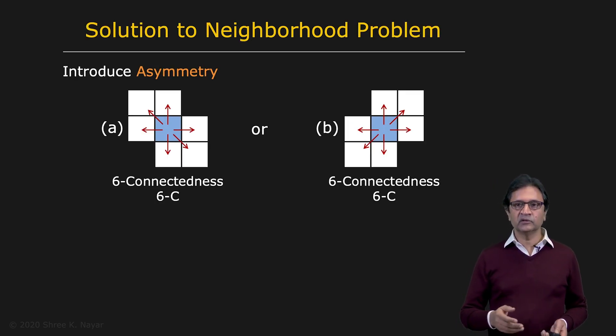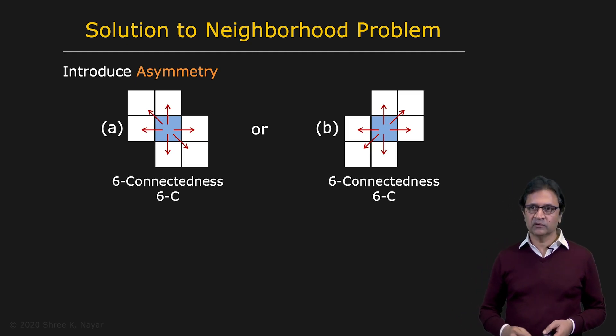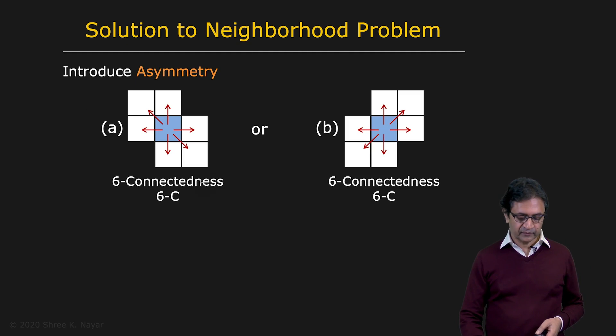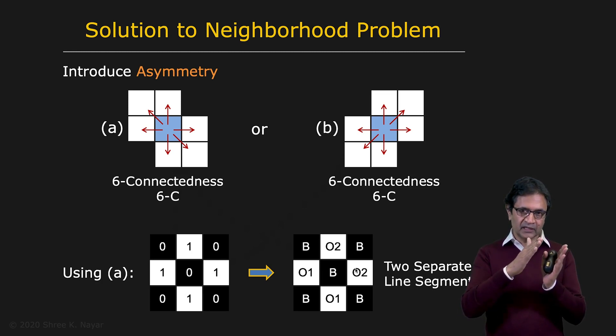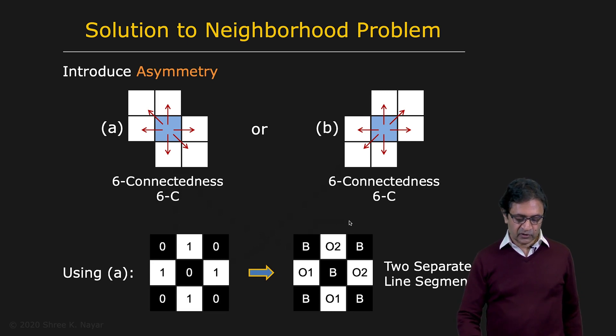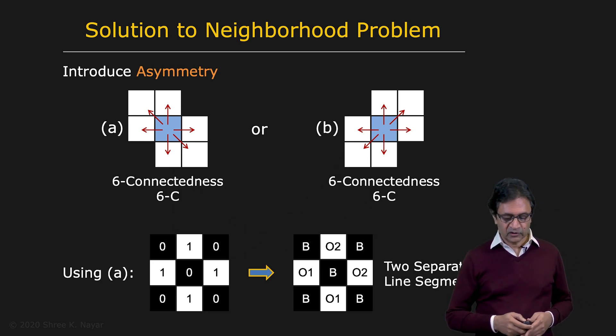So the way we address this is by introducing an asymmetry to the definition of a neighborhood. This is called six connectedness. And here you see that this is the pixel. And we're going to assume that these three and these three pixels are going to be its neighbors, but not these two. Or you can use this one. It doesn't really matter. So now you see that if you come back to our original image, you have ones here. By this definition, if you use this one, these two are connected. And these two are connected. So what you end up with is two line segments. And the backgrounds are all connected now because this background is connected to this. And this, of course, through the larger images connected to this. So this is now consistent with Jordan's curve theorem.